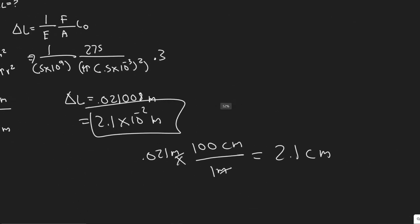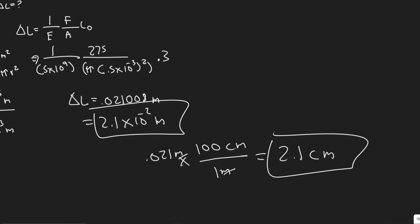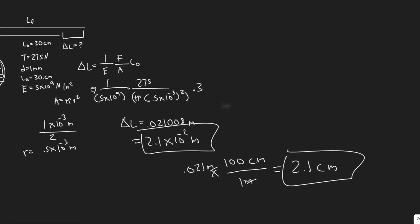And yeah, so you can write it either way: 2.1 centimeters or 2.1 times 10 to the minus 2 meters. Either one are going to be correct. And yeah, so these are your answers. And hopefully, you found this video useful.